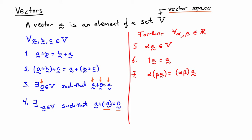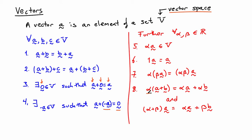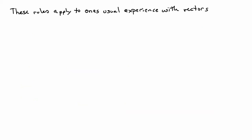The last thing we need is a distributive rule, and there are two aspects. One is that multiplication by scalar alpha distributes across addition of vectors. The other is that multiplication of a vector by the sum of two scalars is equal to multiplying the scalars individually into the vector — note there is a typo there; the b should be an a. So those are the main properties of a vector space, and they comport very well with our usual experience of vectors as directed line segments.